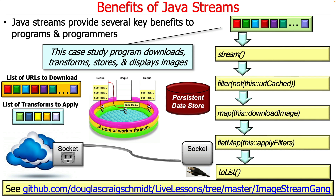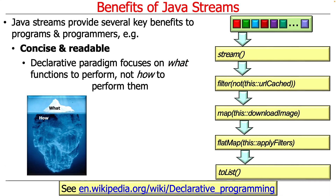The nice thing about this, as we'll see in a second, is once you know how to read streams, you can understand this code by reading it top to bottom in a linear scan. So what's one of the benefits? Well, it's fairly concise and readable. The reason for this is that the declarative paradigm, which is what streams gives you, focuses on what you're doing — what functions, what methods to perform.